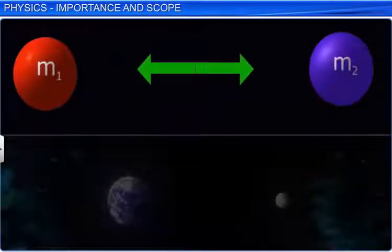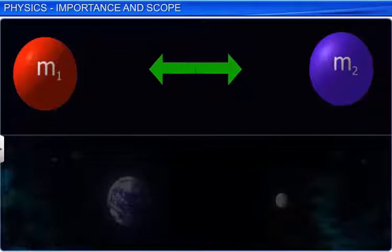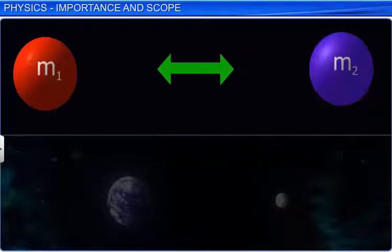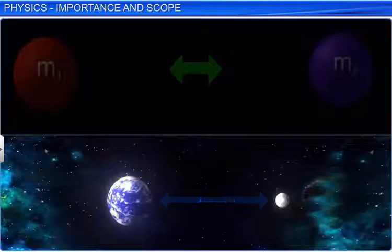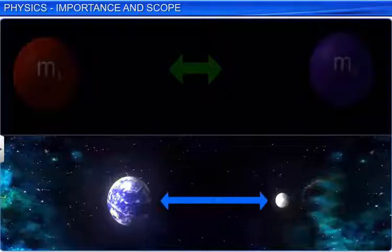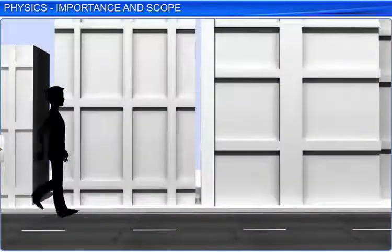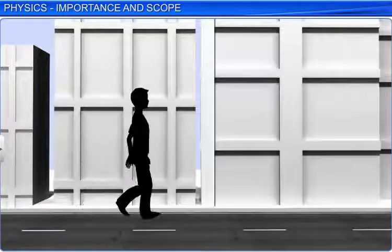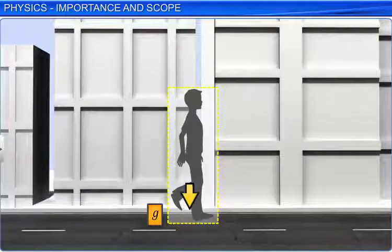The gravitational force is the force of mutual attraction between any two objects by virtue of their masses. It is a universal force and all objects in the universe exert a gravitational force on each other. We are able to stand or walk due to earth's gravitational force exerted on us by the earth.